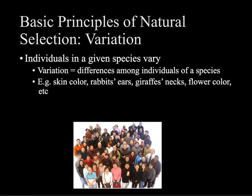The first principle of natural selection is the idea that variation exists. Individuals in a given species vary. We've talked about sources of variation through sexual reproduction — during meiosis, crossing over occurs, there's the law of independent assortment, and then we have mutations too. So even asexually reproducing populations have variation. You can think about all the differences among individuals in a species and how that variation can affect how organisms survive and reproduce.